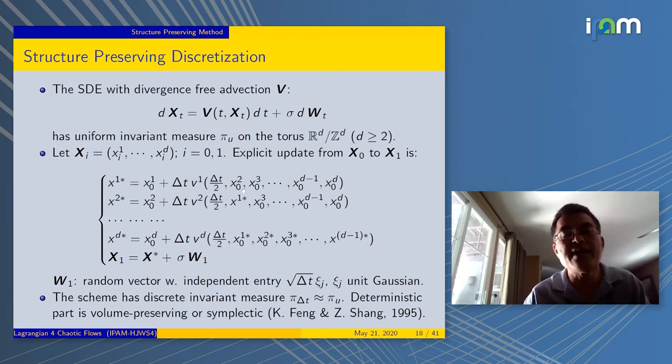In the first component, it's just the Euler. But after the first component is updated, we use it to update the second component. Our flow is the first component of the velocity doesn't have x_1 in it. This is why you see the jump. You update these coordinates one by one. When you finish, last step, you add noise.